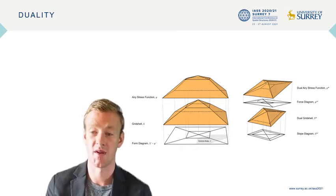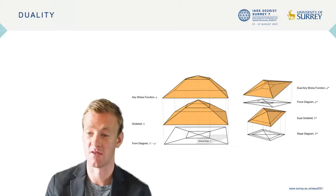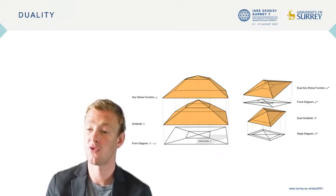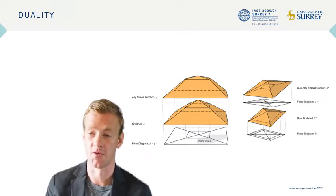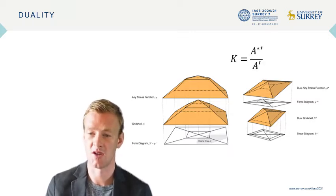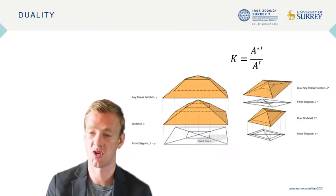This approximates the product of principal forces at the node, as discussed in Maxwell's 1870 paper on Reciprocal Figures, Frames and Diagrams of Forces. The isotropic Gaussian curvature is the area of the reciprocal polygon divided by the tributary area of the node in the form diagram.